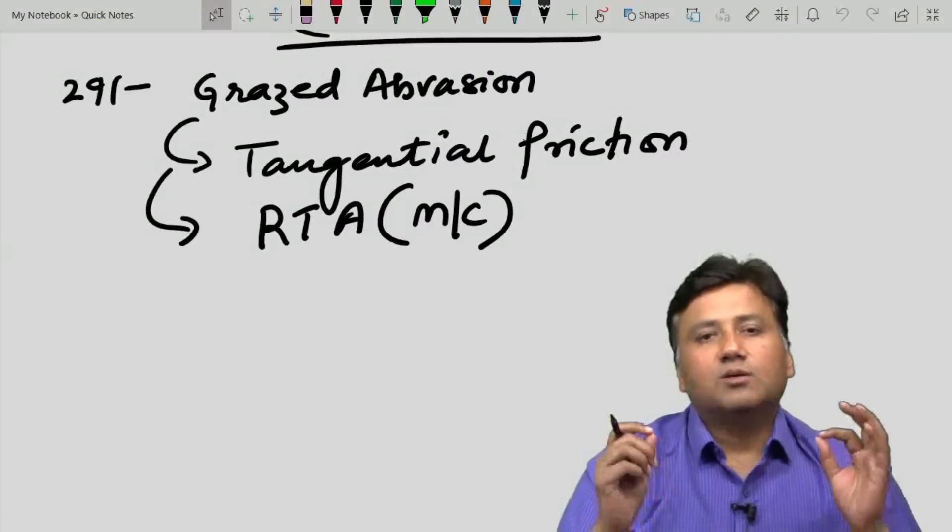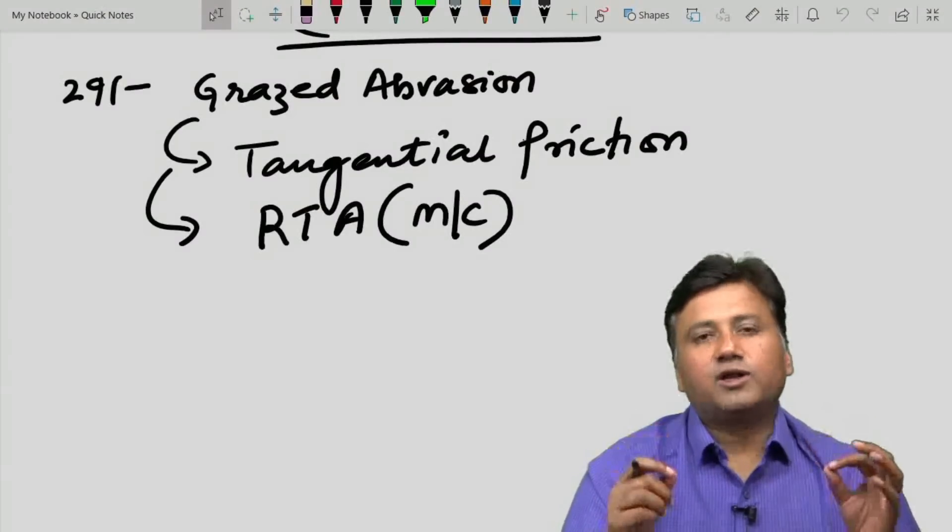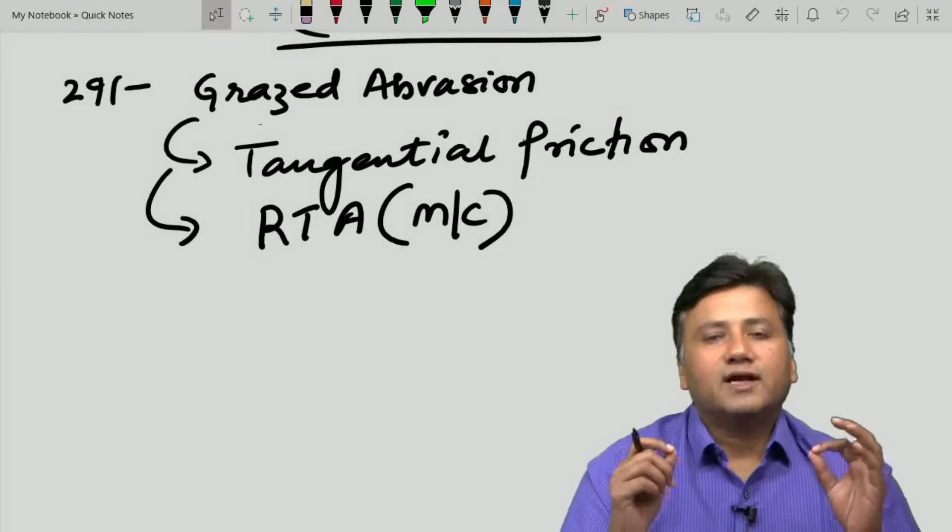Grazed abrasions most commonly in road traffic accident develop at this point of time, that is at the point of tertiary impact injuries.